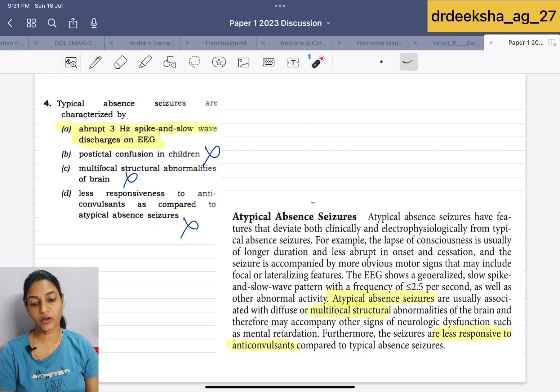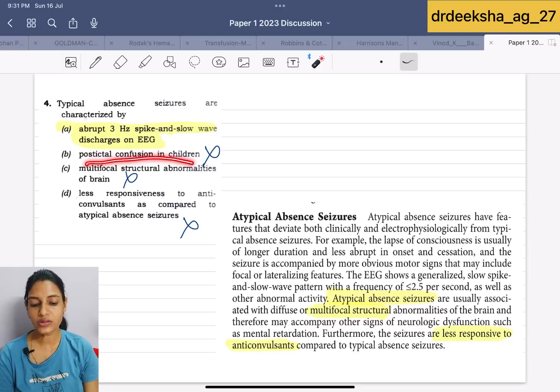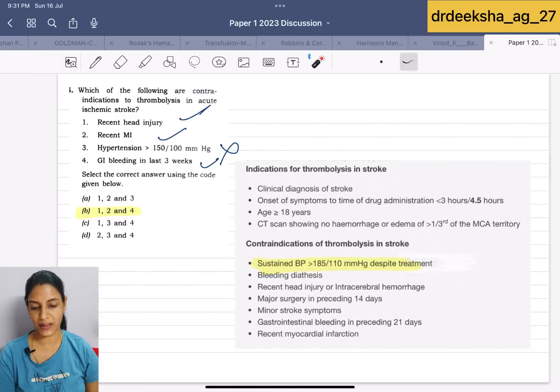Next question is about typical absence seizures. We all know that in the typical absence seizures, there is the abrupt 3-hertz spike and slow wave discharge on EEG. Let us see why other 3 options are wrong. Postictal confusion, no. There is no postictal confusion in the absence seizures. Multifocal structural abnormalities and less responsive to anticonvulsants, these 2 statements are true if we talk about atypical absence seizures, but not true for the typical. Answer for this is abrupt 3-hertz spike.